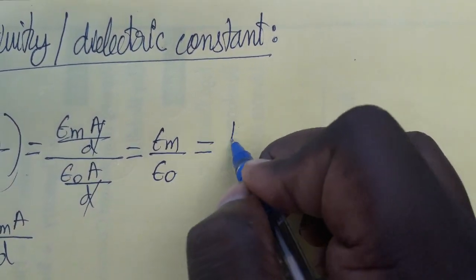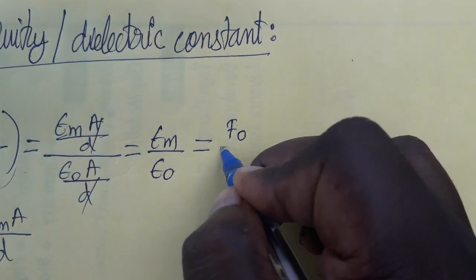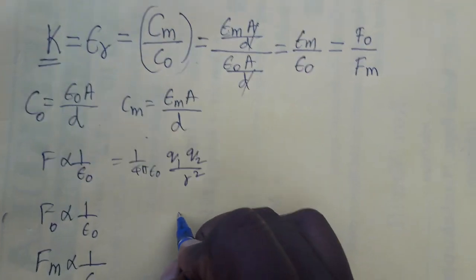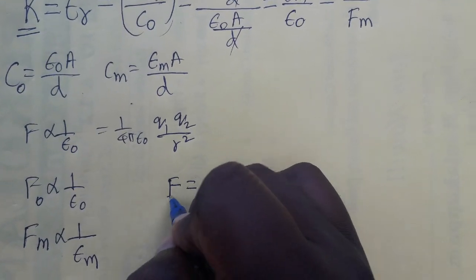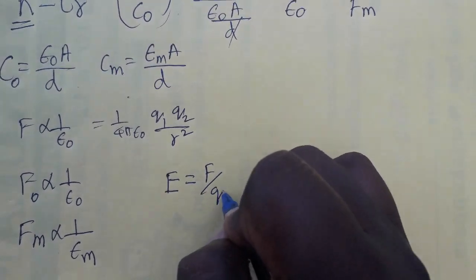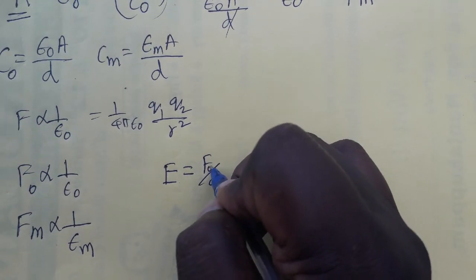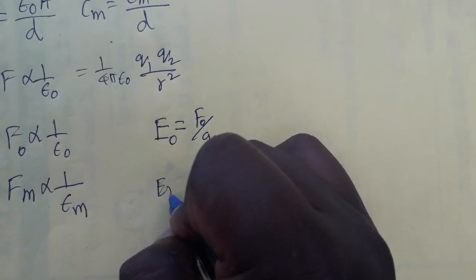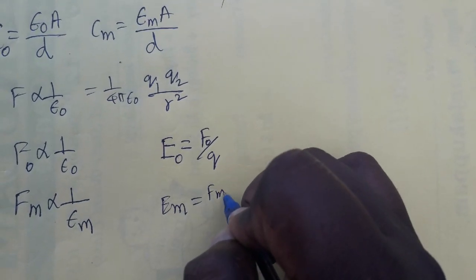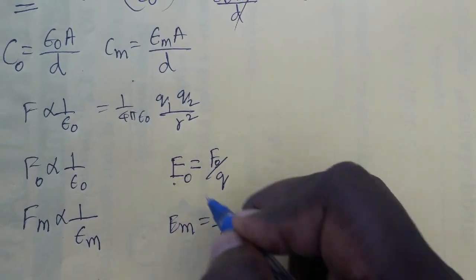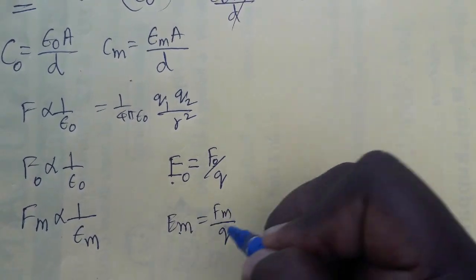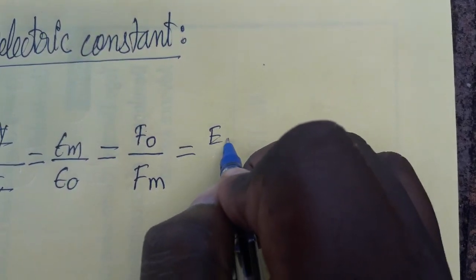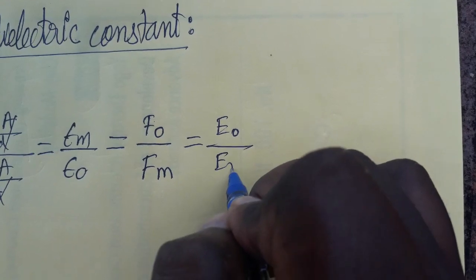Therefore, force in air divided by force in medium equals εₘ / ε₀. Since electric field E equals force per unit charge, force and electric field are directly proportional. So E₀ / Eₘ is also equal to εₘ / ε₀.